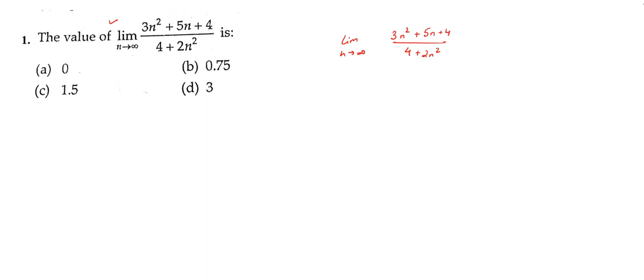This sum can be solved in a very easier manner. What we will do is divide the numerator and denominator by n². So we have limit n tends to infinity of (3 + 5/n + 4/n²) divided by (4/n² + 2).